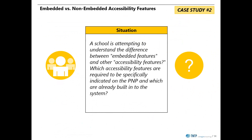Here is a second case study. A school is attempting to understand the difference between embedded features and other accessibility features. Which accessibility features are required to be specifically indicated on the PNP, and which are already built into the system?